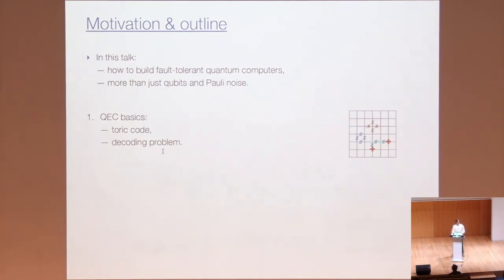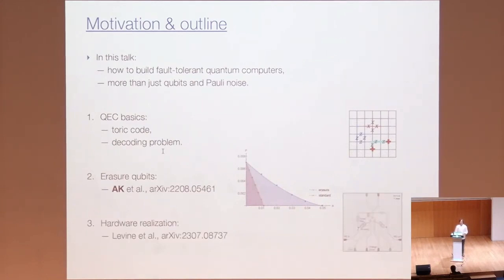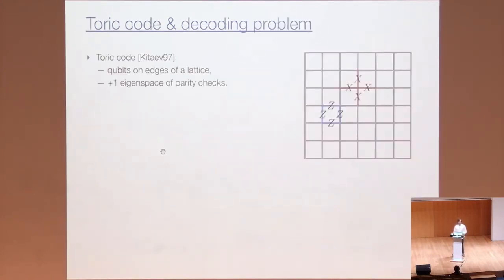Here's the outline of my talk. I will start with some basics of quantum error correction with the emphasis on the Toric code and the problem of decoding of the Toric code. Let me emphasize that if we cannot solve the decoding problem efficiently, then there's no hope to have fault-tolerant quantum computers. So definitely, we have to put a lot of effort into this problem.